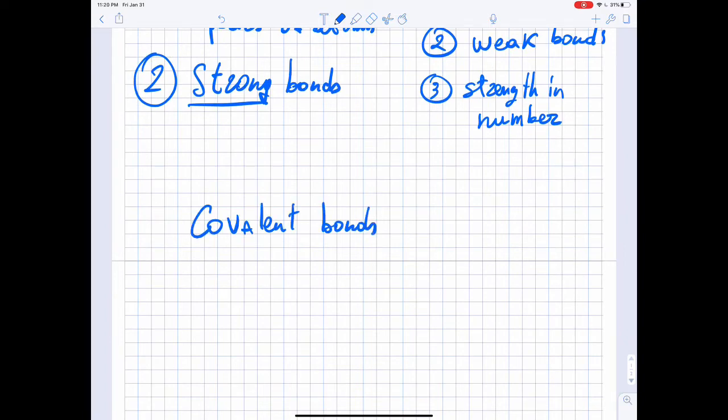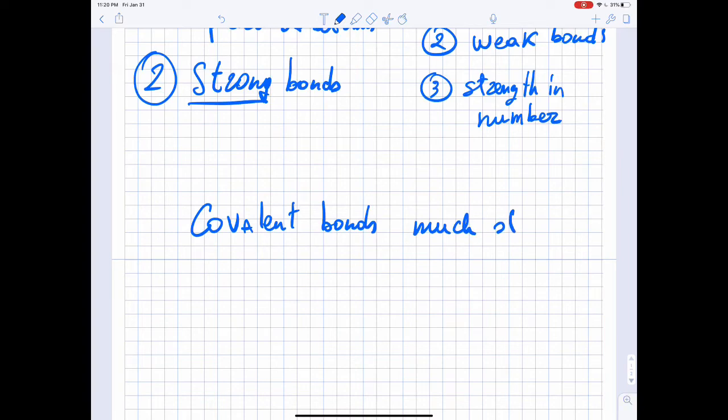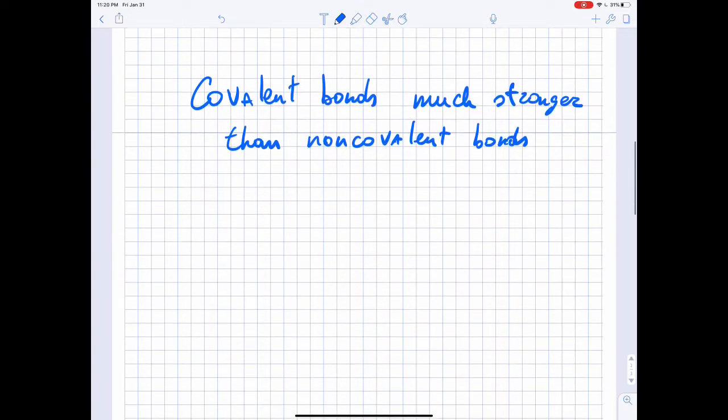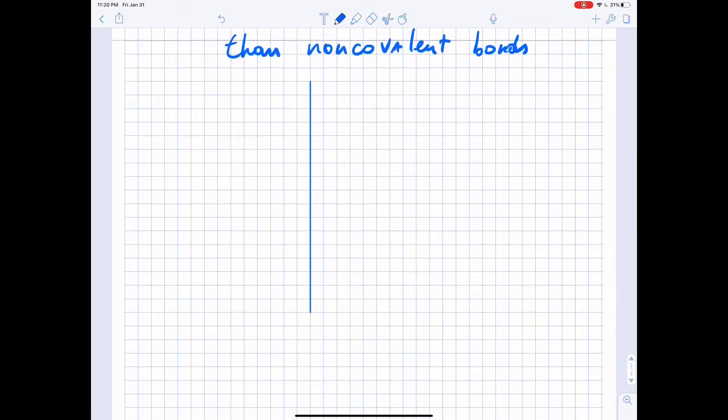Covalent bonds are much stronger than non-covalent bonds. If we make a graph where on the y-axis we put the bond energy per kilojoule per mole, let me label the different energies: 100, 200, 300, 400, until 500.